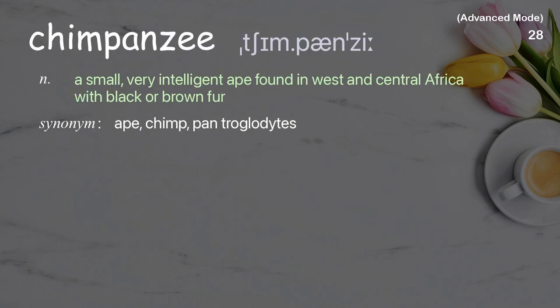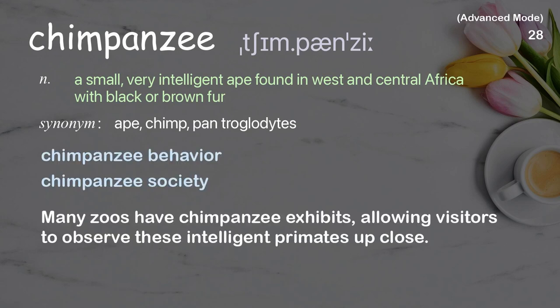Chimpanzee. A small, very intelligent ape found in West and Central Africa, with black or brown fur. Examples: Chimpanzee behavior. Chimpanzee society. Many zoos have chimpanzee exhibits, allowing visitors to observe these intelligent primates up close.